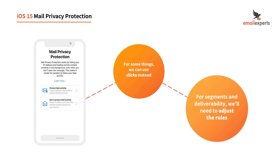For example, in the engaged audience definitions, instead of being defined as a six or seven month open window, we recommend extending it to a nine month window and using clicks instead — so instead of a six month open window, use a nine month click window. We also won't be able to run subject line A/B tests since we won't know open rates very well, so we recommend you run as many as you can in the meantime to learn lessons that you can carry forward.